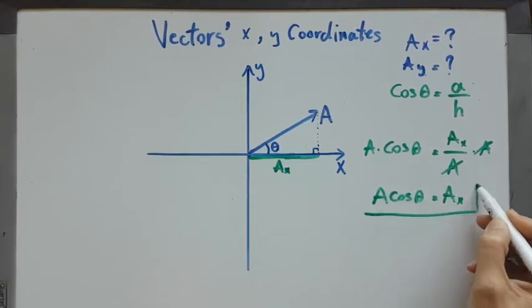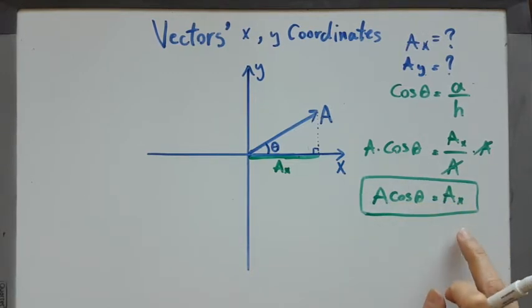So this is the formula for ax. Always to find the x coordinate of a vector, we have to use this formula.